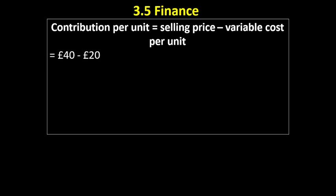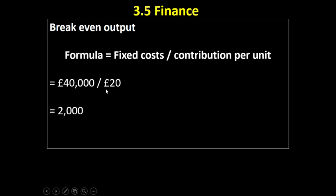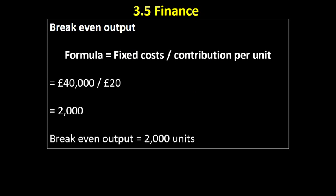Let's apply the formula using those figures. The selling price was £40 and the variable cost per unit was £20, giving a contribution per unit of £20. Putting that into the formula — fixed cost divided by contribution per unit — we get £40,000 divided by £20, which equals 2,000 units. We express the break-even output in units, and we've seen that confirmed on the chart. A subsequent video will cover contribution per unit in more detail.